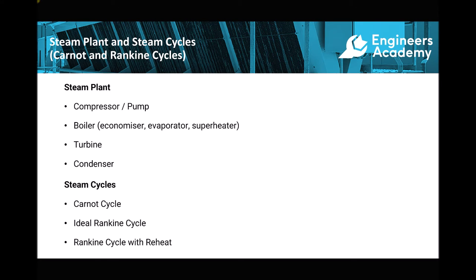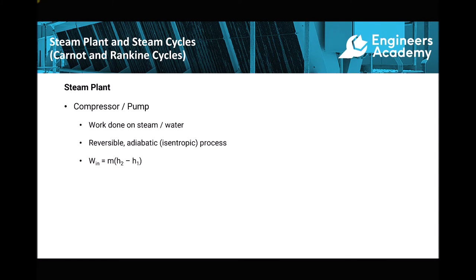To begin with, the components in our steam power plant: first of all we have either a compressor or a pump, depending on the type of cycle we're using to model the system. The compressor or pump is used to do work on the steam or the water — we use a compressor if we have steam and a pump if we have water — thereby increasing its pressure. Each of these processes is modeled as a reversible adiabatic or isentropic process, meaning entropy before and after is the same. The formula used to determine the work input is the mass of water or steam passing through the device multiplied by the enthalpy change.